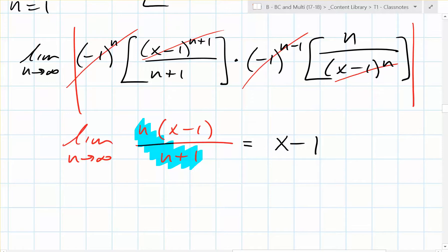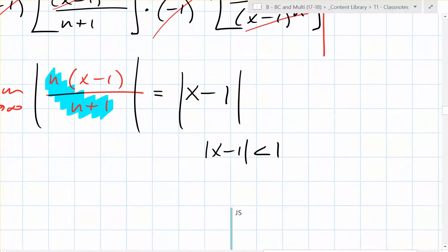What's the conclusion of the ratio test? When does it converge? In order for this power series to converge, the absolute value of x minus 1 must be less than 1. This means that x minus 1 has to be less than 1 or greater than negative 1. So x has to be between 2 and 0.